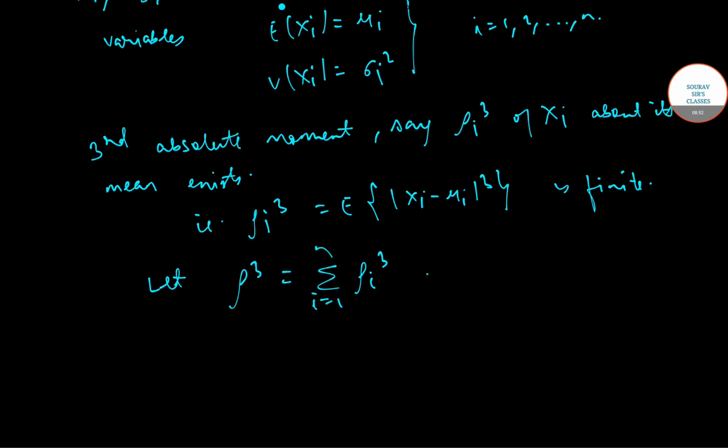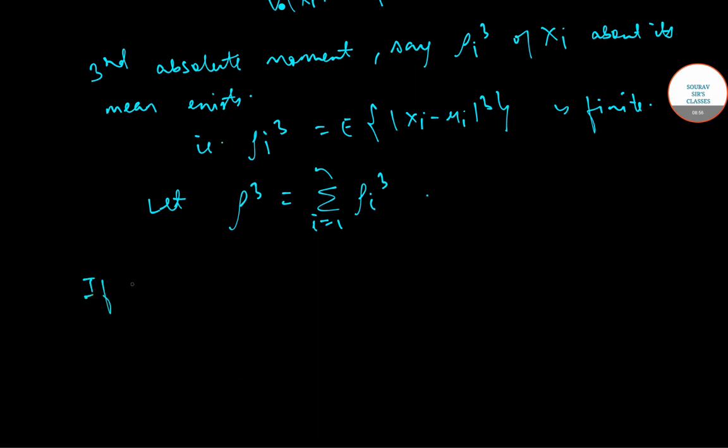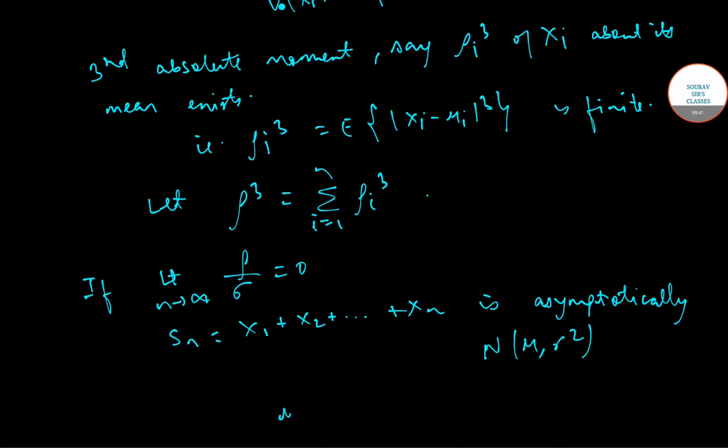Further, let rho cube equal summation rho i cube where i goes from 1 to n. Then if limit n tends to infinity rho by sigma equals 0, then the sum Sn equals x1 plus x2 and so on up to xn again asymptotically follows normal mean mu and sigma square, where mu equals summation mui and sigma square equals summation sigma i square, and in both cases i goes from 1 up to n.